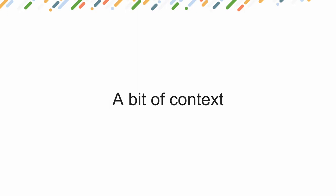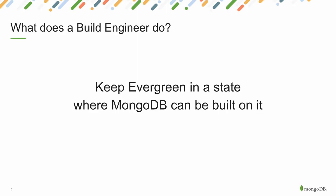The first thing to set you up for what we're going to talk about is I have to tell you about what we had and how it all works today, and then talk about why the problem that came up is a problem. What does a build engineer do? A lot of companies probably don't have build engineers, but we do. What we do at Mongo is we keep Evergreen, which is our CI system, in a state where MongoDB can be built upon it. MongoDB is a big giant C++ program. Building it is not exactly straightforward and requires dependencies and all kinds of stuff in particular places. Our job is to make sure that the build hosts are able to do that and that the Evergreen infrastructure itself stays up and happy.